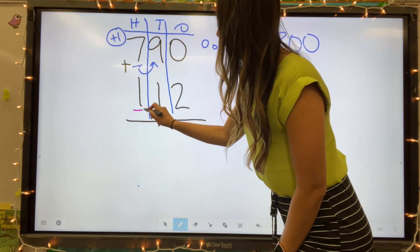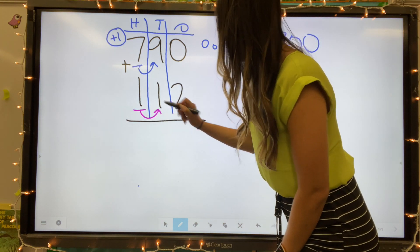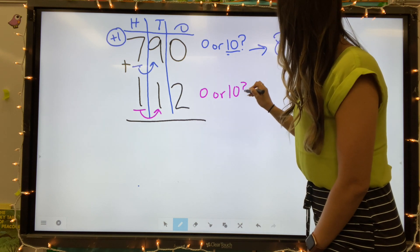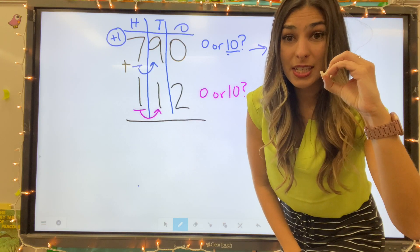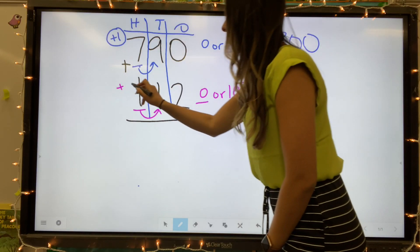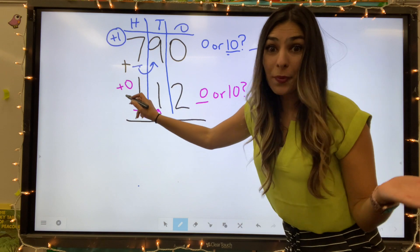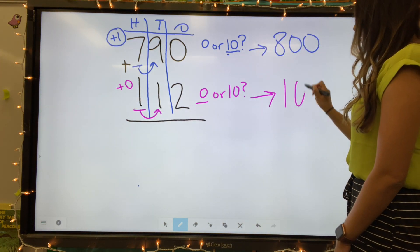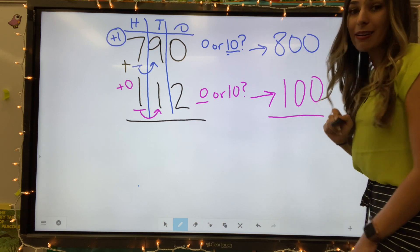Next number. Hundreds place. Look next door at that one. Ask myself, is that one closer to zero or a ten? Is that one closer to zero or ten? Way closer to zero. Because it's closer to zero, I'm going to add zero. And one plus zero equals one. So I'm going to keep that one here, make it a hundred because we're rounding to the nearest hundred.